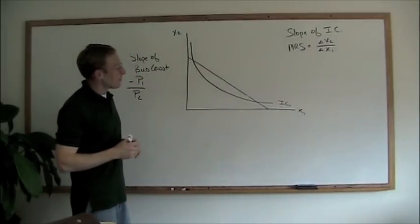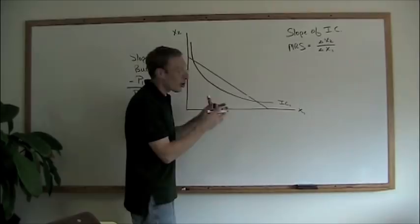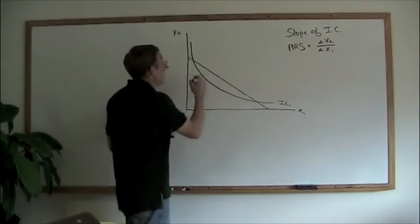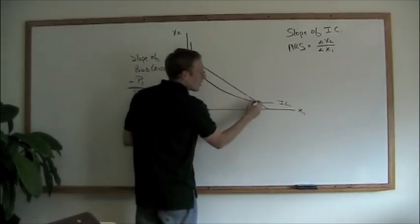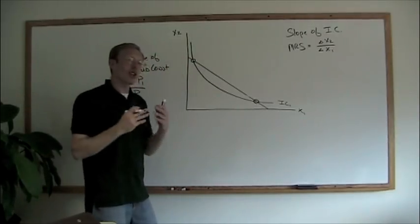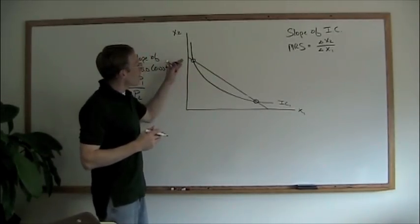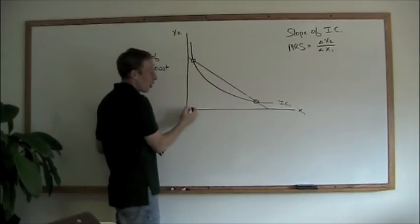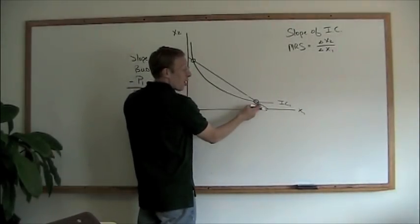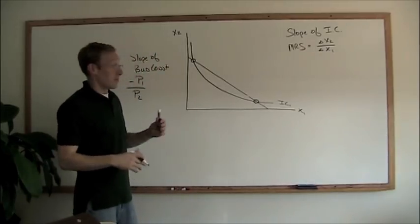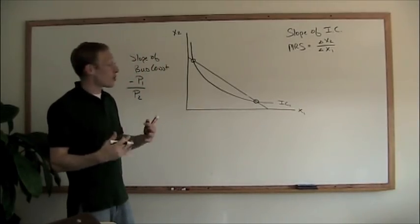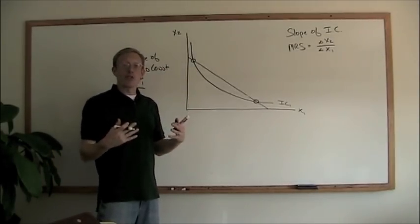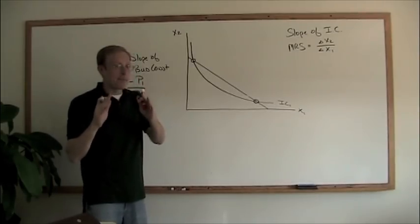One of the things about models is you always want to pay attention to where lines cross each other. Here we have a situation where the budget constraint and the indifference curve are crossing in two places. We've got a potential outcome of buying a very high amount of X2 and a small amount of X1, or a big amount of X1 and a small amount of X2. We're indifferent between the two, so perhaps it wouldn't matter — if we chose one of those two outcomes, we've got an optimal decision. But it's not quite that easy.